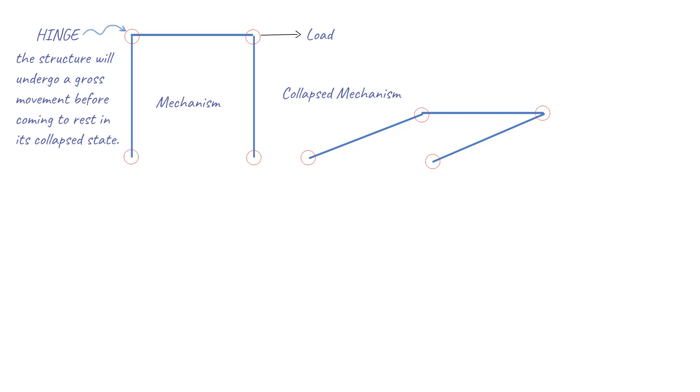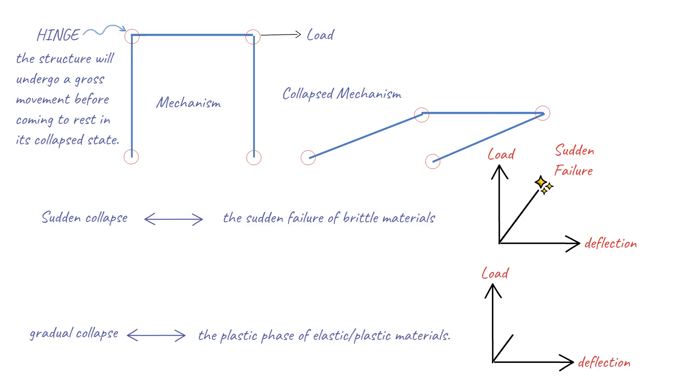These two types of collapse can be compared with the two types of material behavior. The sudden collapse can be compared with the sudden failure of brittle materials, and gradual collapse with the plastic phase of elastic-plastic materials.